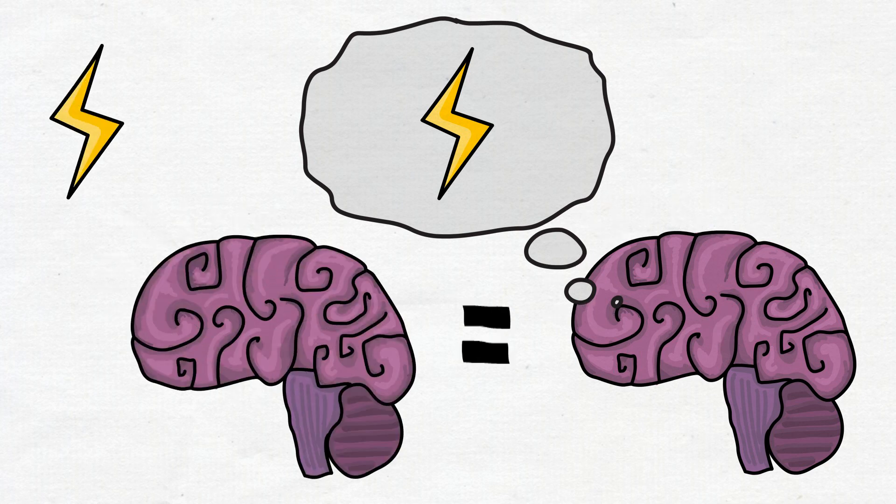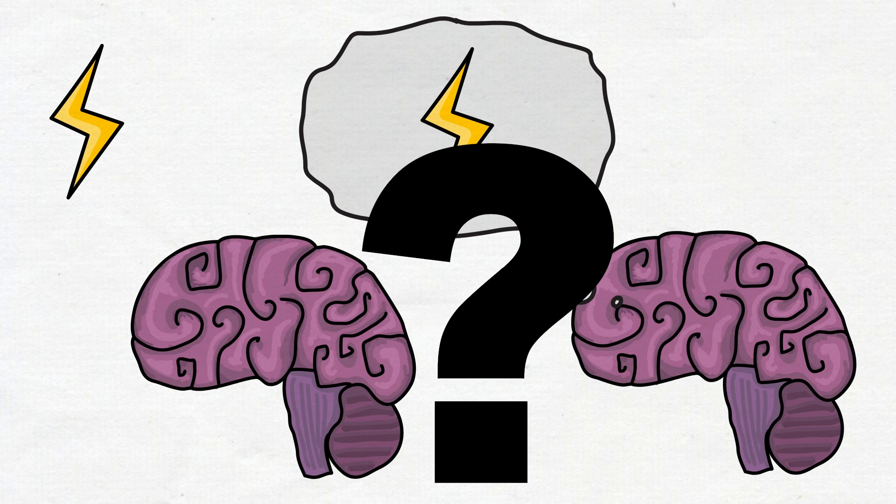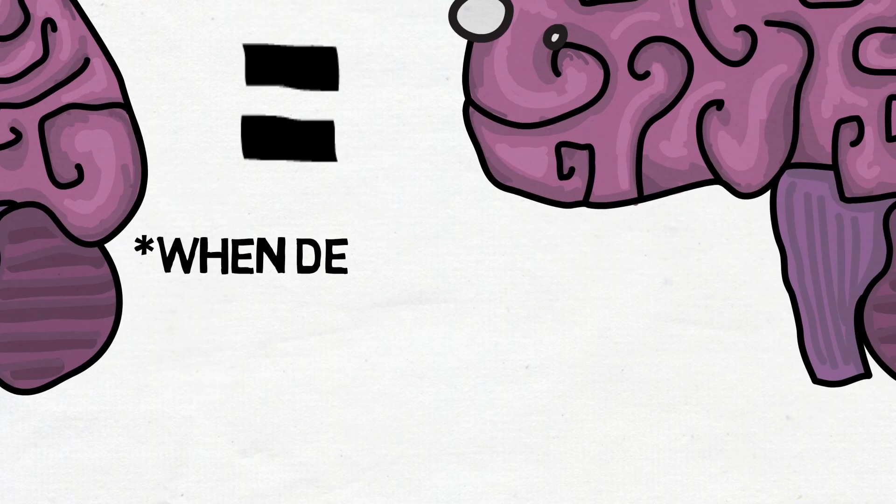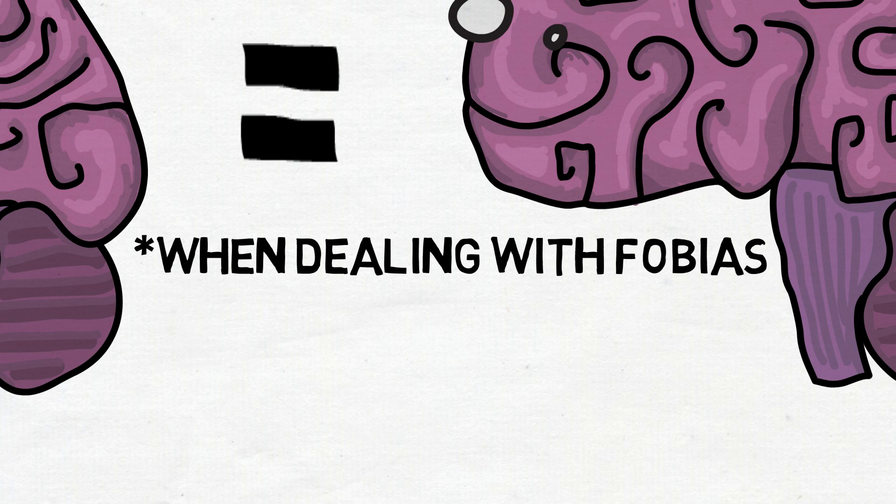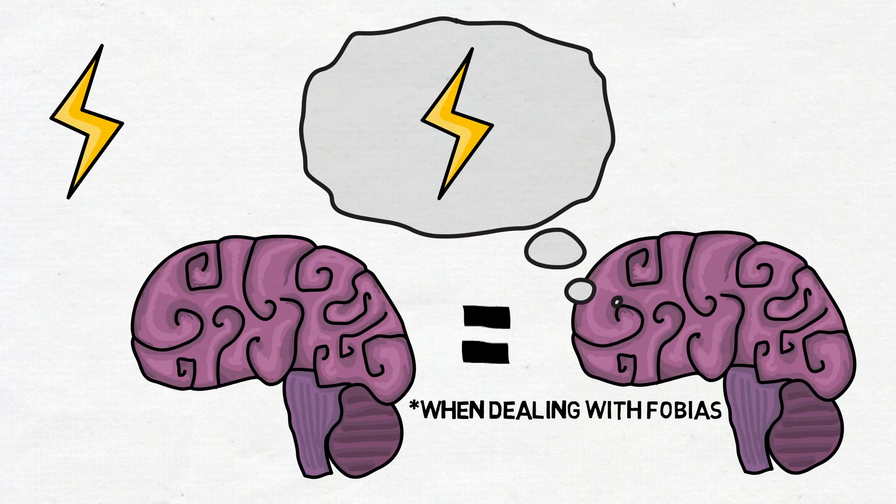And big surprise, brain activity was remarkably similar. Inside our brains, the same neurons fire together despite the fact that we're imagining or experiencing the real thing. So is our brain on imagination similar to our brain on reality?